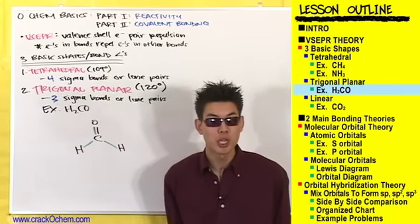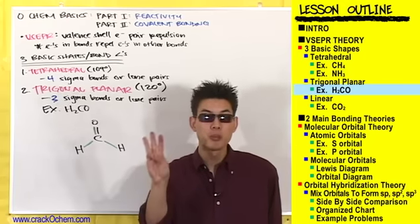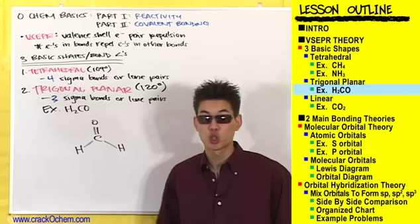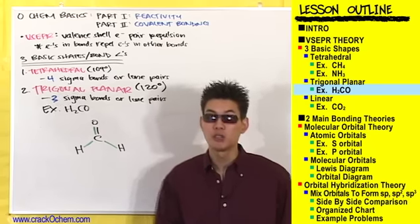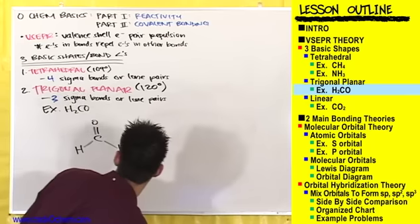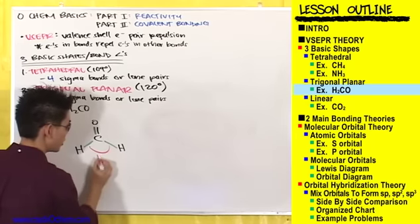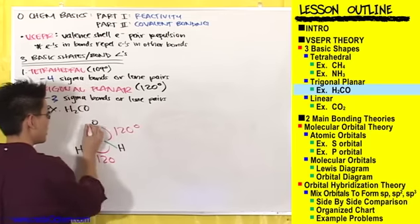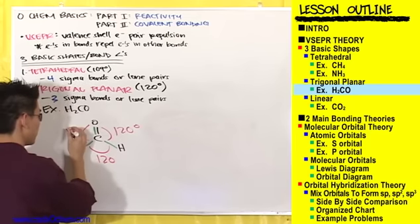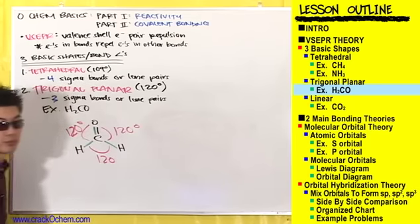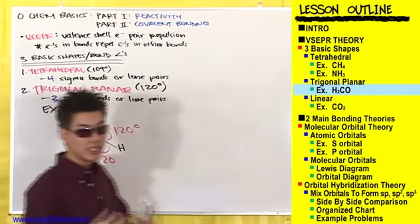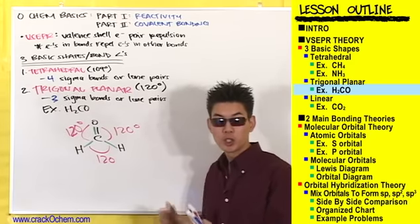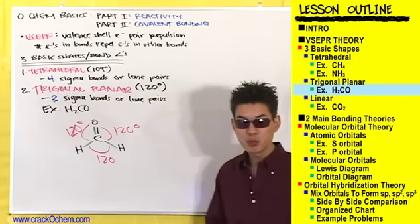If you remember, the best possible arrangement for three bonds is this equilateral triangle shape, also known as trigonal planar, with bond angles of 120 degrees. So 120 degrees separate these atoms, these atoms, and these atoms. This is why a compound with three bonds has a trigonal planar shape.